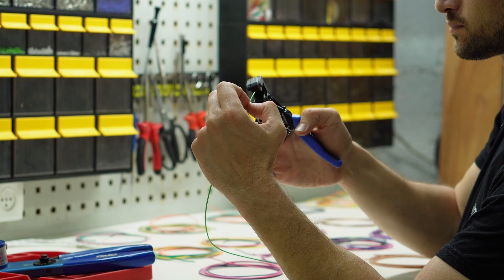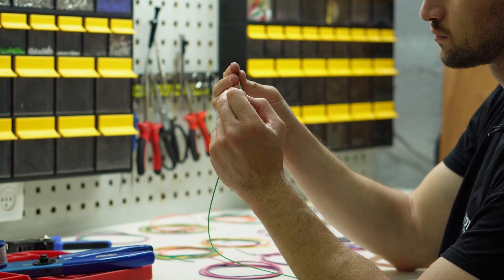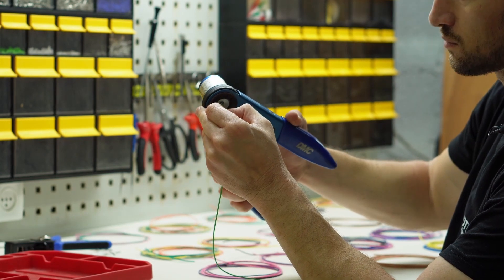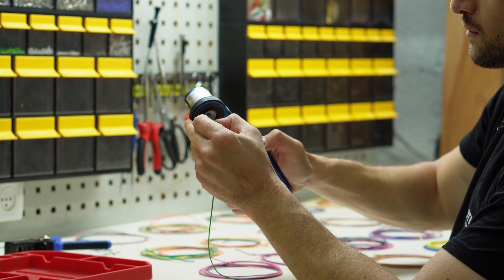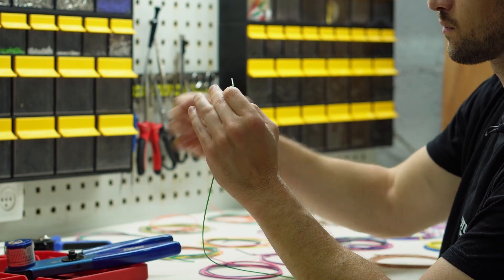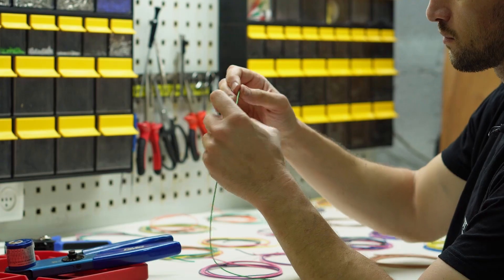The second thing to take notice of is the strip length. On one hand you want to expose enough conductors so that you get a solid crimp. On the other hand you do not want to expose too much conductor otherwise when trying to populate the bulkhead connector the wire could start bending and that's not a good day for anyone when that happens.